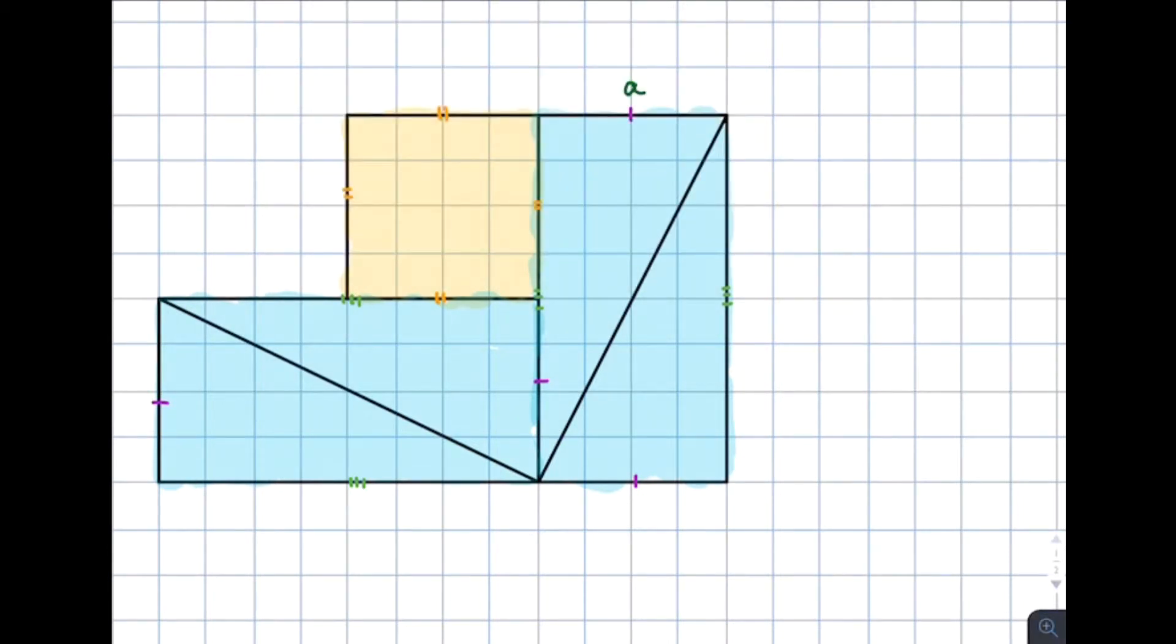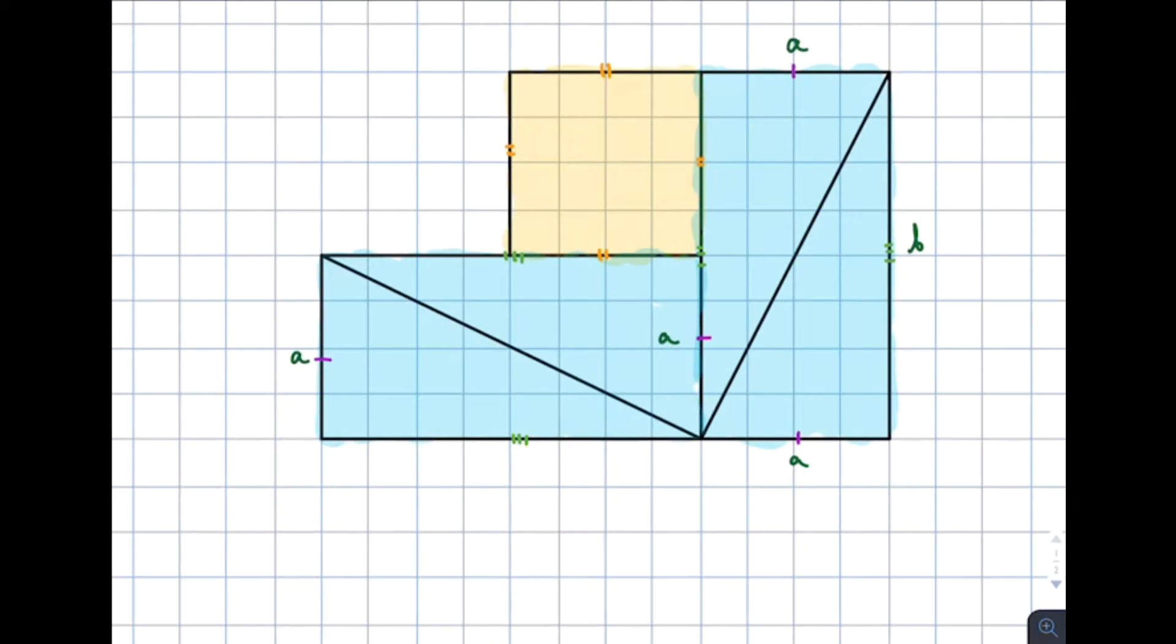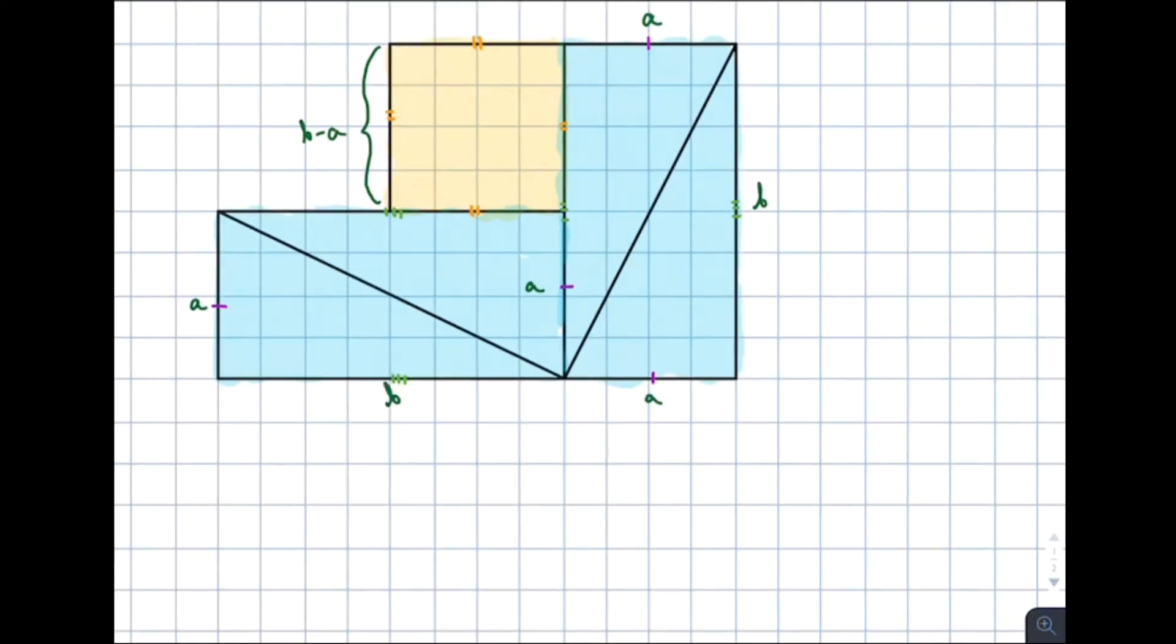This side we can get a, a, a and a. And this side we can get b. The square is equal to b minus a.